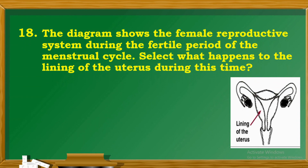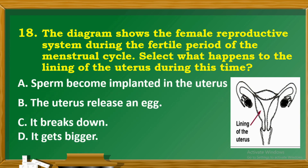Question 18: The diagram shows the female reproductive system during the fertile period of the menstrual cycle. Select what happens to the lining of the uterus during this time. A. A sperm becomes implanted in the uterus. B. The uterus releases an egg. C. It breaks down. D. It gets bigger.